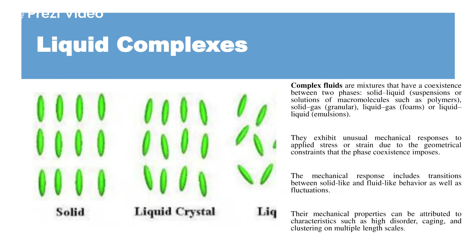Since this is the intermittent stage, it has attributed properties from both the solid and the liquid state, and it has unusual reactions when any form of mechanical stress is applied. The molecular arrangement is disordered and they have different caging structures. Commercially used preparations like liquid-gas foams are seen in shampoos as well as shaving creams.